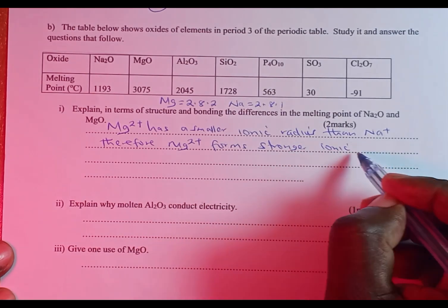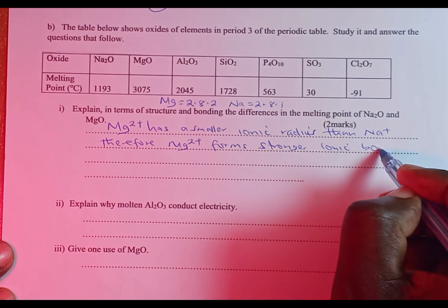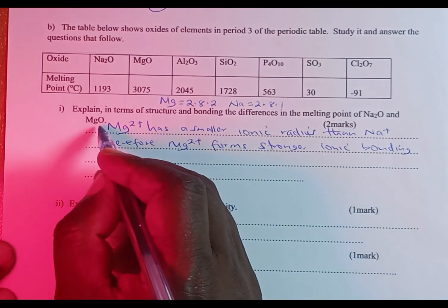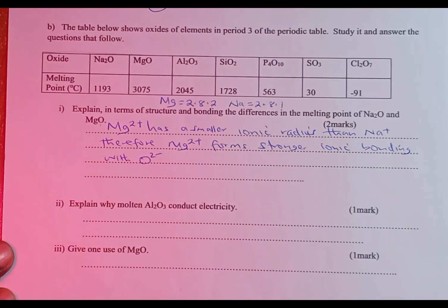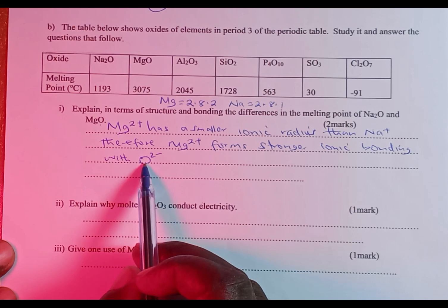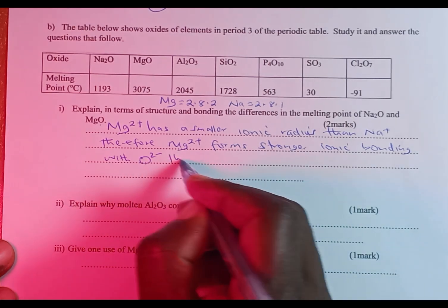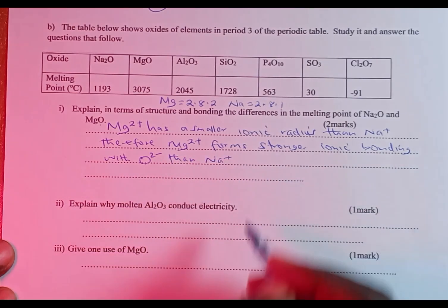Therefore magnesium ions form stronger ionic bonding with the oxide ion (O²⁻) than sodium ions do. This means more energy is required to break the bonds in magnesium oxide, which explains its higher melting point compared to sodium oxide.